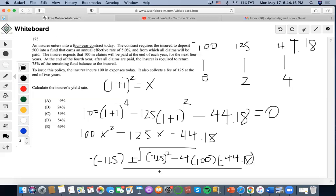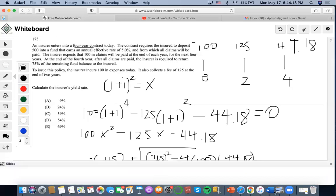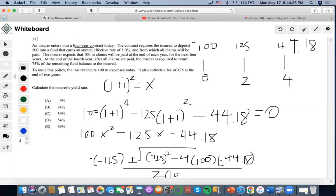So I'm going to do this over 2a. I'm going to take 125 squared minus 4 times 100 times 44.18. I'm going to get the square root of that, which is 182.47. So 125 plus 182.47 divided by 200, and I end up getting 1.53 as x.